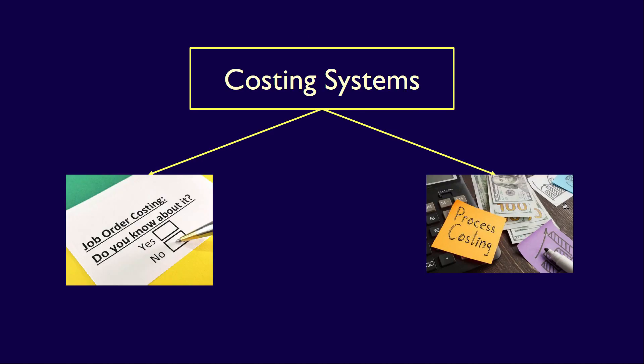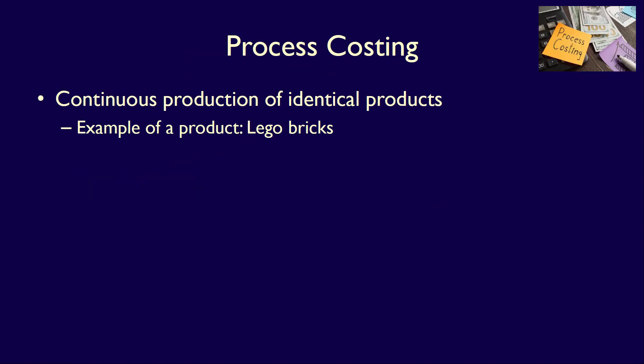What about a process costing system? A process costing system is used when products are produced continuously and each product is identical. In addition, the volume of products produced is huge. A great example would be Lego bricks. It's estimated, at least according to Wikipedia, that the annual production of Lego bricks averages 36 billion — that's about 1,140 bricks per second. This is a perfect example for the use of the process costing system.